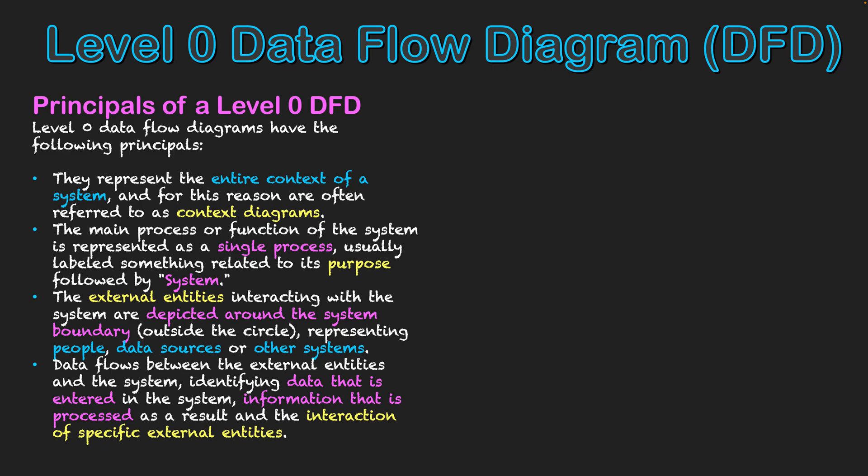And then finally, data flows between the external entities and the system, identifying data that is entering into the system from the external entities and information that is coming out of the system back to either the same or different external entities based on the system's purpose. And so all interactions between the external entities are happening through the actual system's process. So arrows don't go between external entities. They all go in and out of the circle that represents the system, and then that changes the data, and then it's sent by the process to another external entity or to the same external entity.